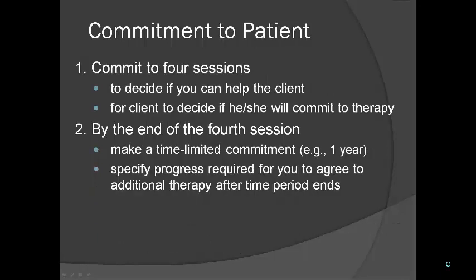By the end of the fourth session, you want long-term commitment to no suicide, long-term commitment to no self-harm, working on therapy-interfering behaviors, completing a diary card and therapy homework, engaging in regularly structured productive activities, and working on not avoiding everything. Your commitment to the patient is to four sessions to decide if you can help them, and for the client to decide if he or she will commit to therapy. By telling a client you're going to decide if you can help them makes it seem more desirable — using the dialectic to get them more engaged. By the end of the fourth session, you make a time-limited commitment, for example one year, and specify the progress required for you to agree to additional therapy after that period.